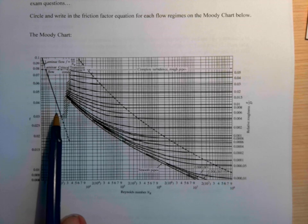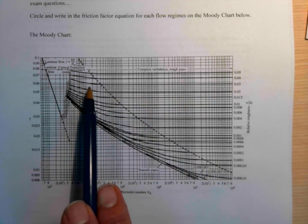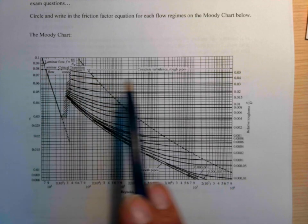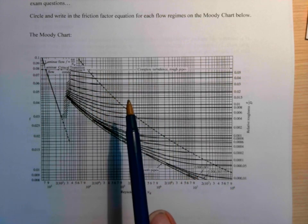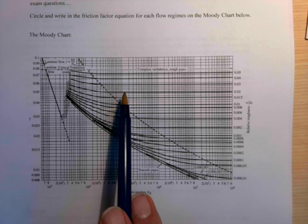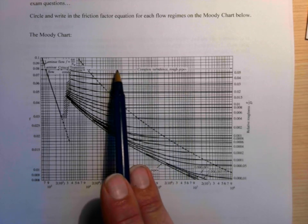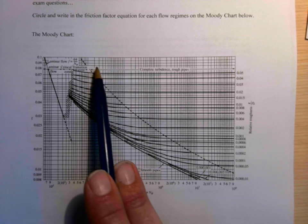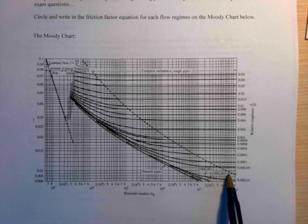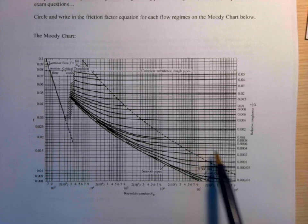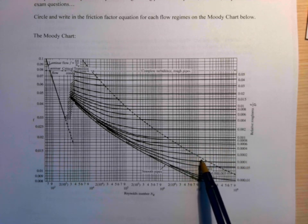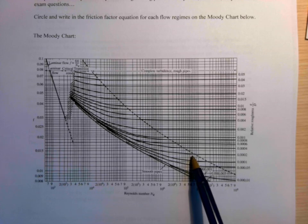Laminar flow is here on the left side, and then turbulent past this critical zone. For turbulent, there's three different possibilities. We have the rough pipe, complete turbulence, where these lines are all flat, and that's to the right of the dashed line. You can see how they all flatten out once you reach the dashed line, maybe a little bit to the left of it even.